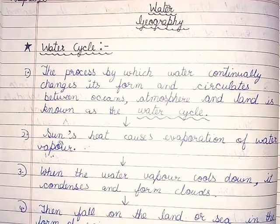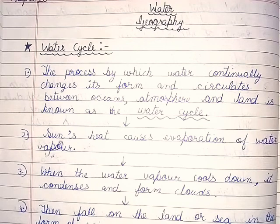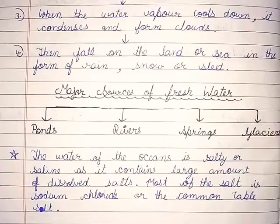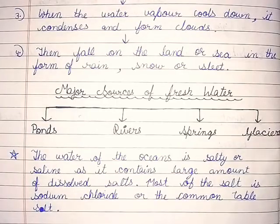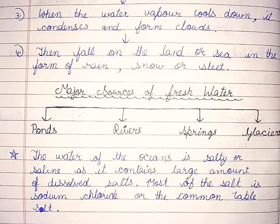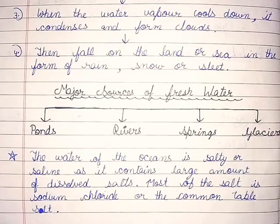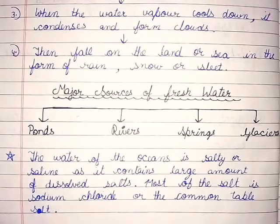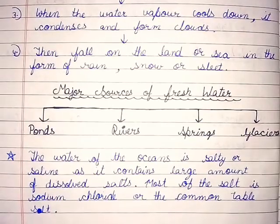Sun's heat causes evaporation of water vapor. When the water vapor cools down, it condenses and forms clouds. Then it falls on the land or sea in the form of rain, snow or sleet.